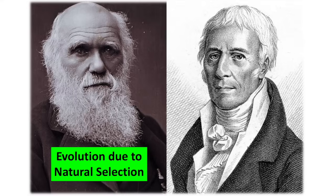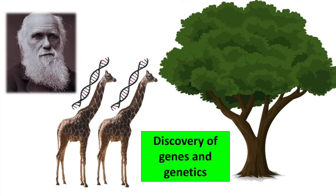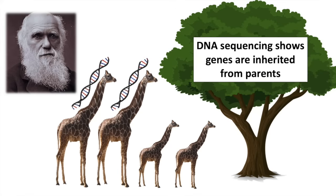Darwin's theory of evolution due to natural selection has been proven as undeniable scientific fact, whereas Lamarck's theory of evolution due to inheritance of acquired characteristics has been disproven. Evolution by natural selection has been proven due to the discovery of genes and genetics. And DNA sequencing shows genes are inherited from the parents.